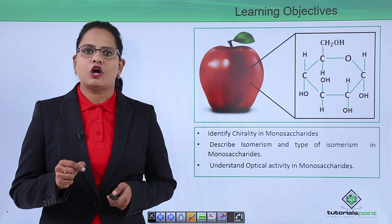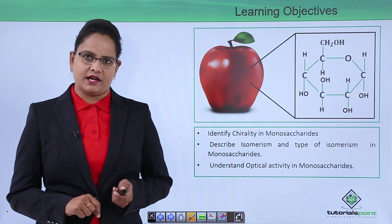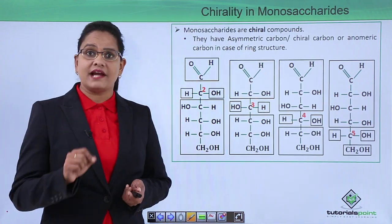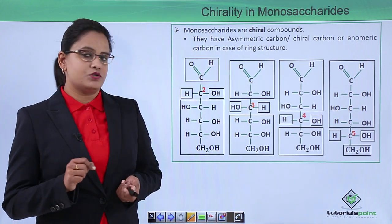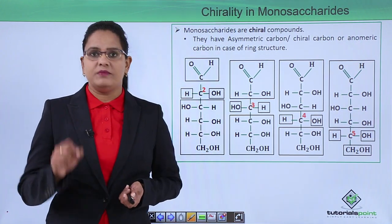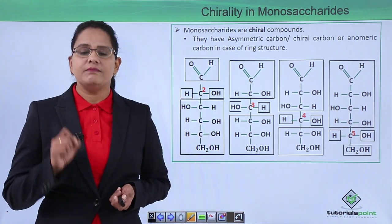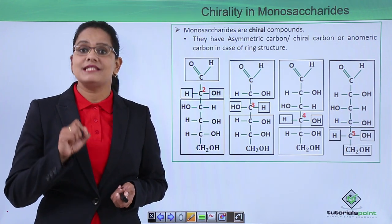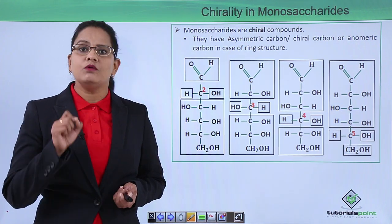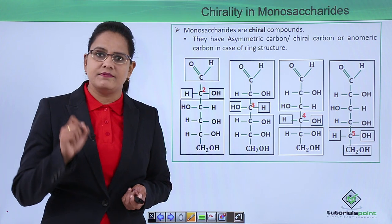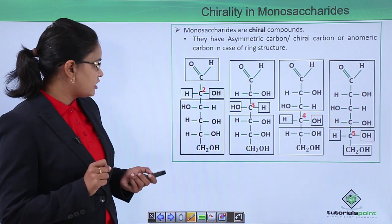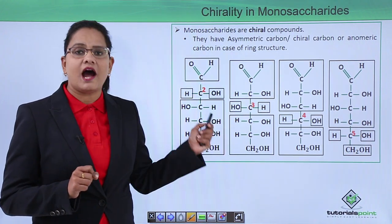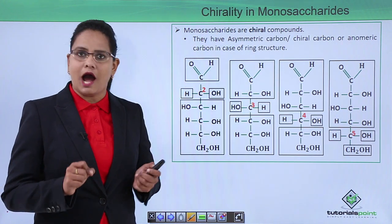First, let us talk about chirality in monosaccharides. Monosaccharides are chiral compounds. What do you mean by chiral compounds? It means that they have a carbon which is asymmetric. Let us see what is an asymmetric carbon. In this structure, the carbons marked in red are the asymmetric carbons.